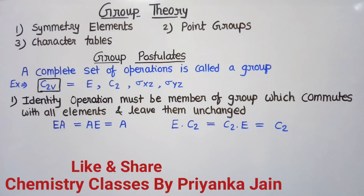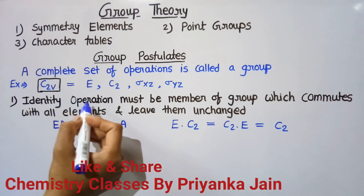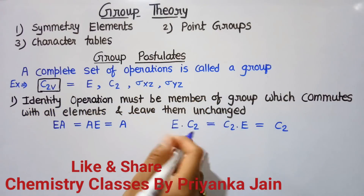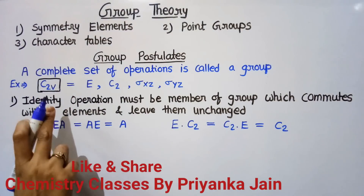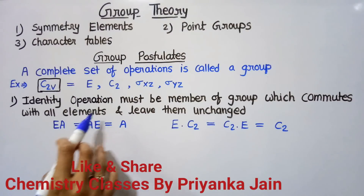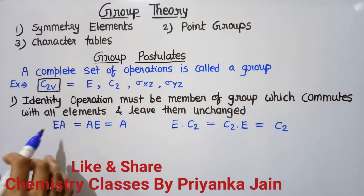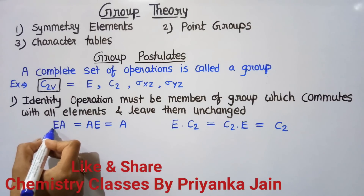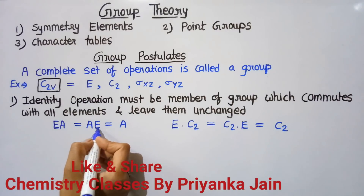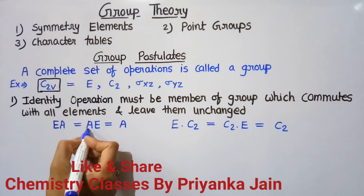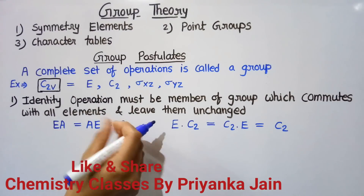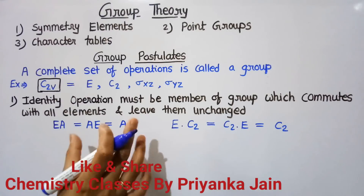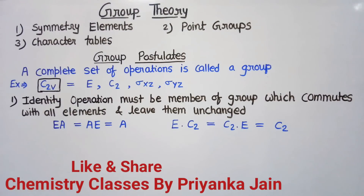The first postulate is: the identity operation must be a member of the group. It means in every group the identity operation must be present, which commutes with all the elements and leaves them unchanged. Suppose there is an element A and identity E — if we apply element A and then identity, it will be equal to applying identity first and then element A.